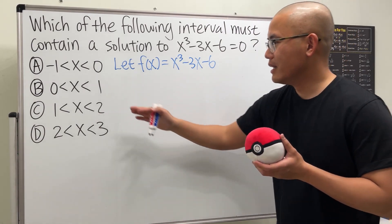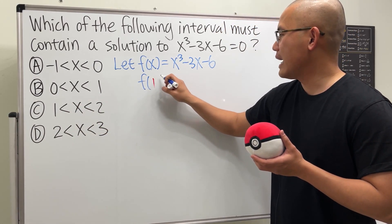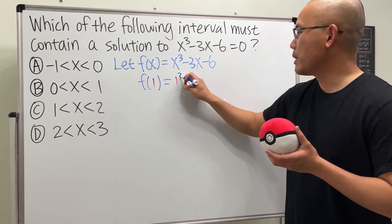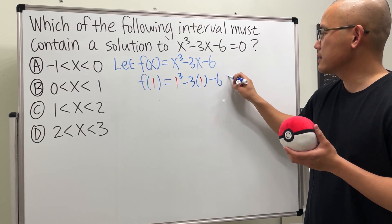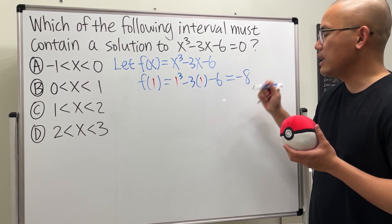But anyway, have a look. Put 1 into the function. We are looking at f(1). And that will give us 1 to the third power minus 3 times 1 and then minus 6. This is 1, minus 3, and then minus 6 is equal to negative 8.